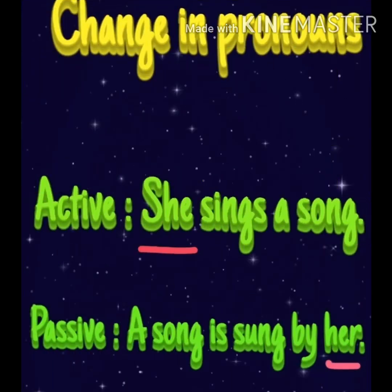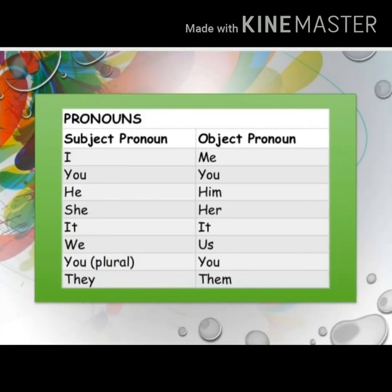Change in pronoun. In the active voice, 'she' is the pronoun and it changes to 'her.' There are two important things to remember. When replacing the subject with the object, if the subject is a pronoun, the conversion will be: I → me, you → you, he → him, she → her, it → it, we → us, you (plural) → you, they → them. This is how pronouns are converted.